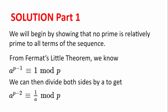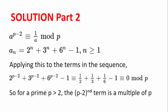Seeing that a half plus a third plus a sixth is equal to 1, we can apply this to the terms in the sequence to get: 2 to the power of p minus 2, plus 3 to the power of p minus 2, plus 6 to the power of p minus 2, minus 1, congruent to a half plus a third plus a sixth minus 1, which is 0 modulo p. So for a prime greater than 2, the (p minus 2)th term is a multiple of p, and so it is not relatively prime to p.